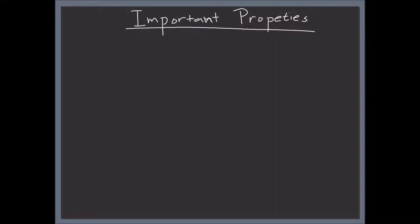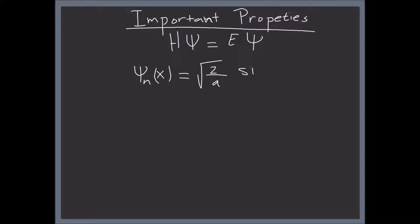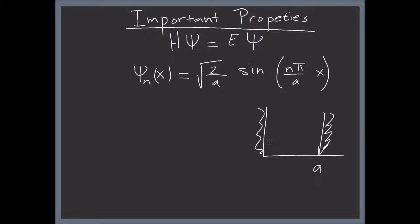Now we're going to take a look at the important properties of the solution we found from video number 8. These properties are valid for any solutions for the Schrödinger equation, H-psi equals E-psi. For the infinite square well we just did in video 8, we arrived at the solution: psi sub n of x equals the normalization constant, square root of 2 over a, times sine of n pi divided by a times x. These are the solutions for the Schrödinger equation with the infinite square well potential.